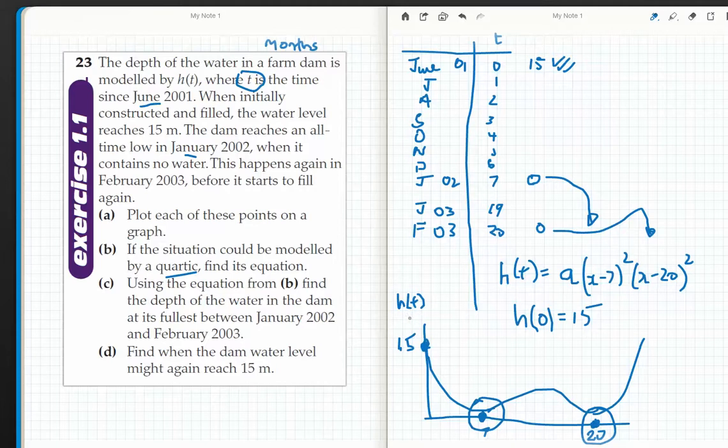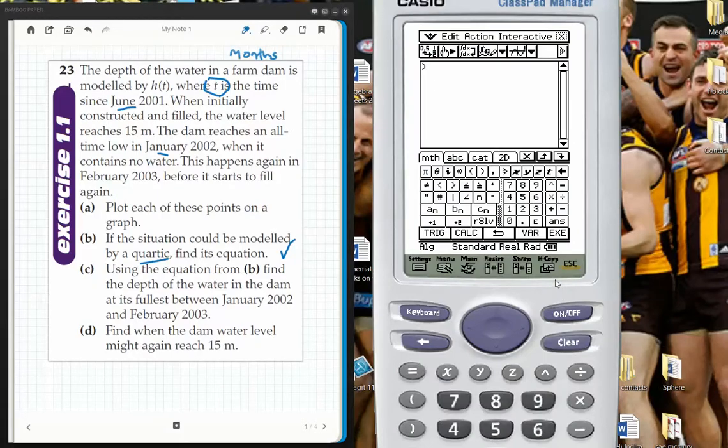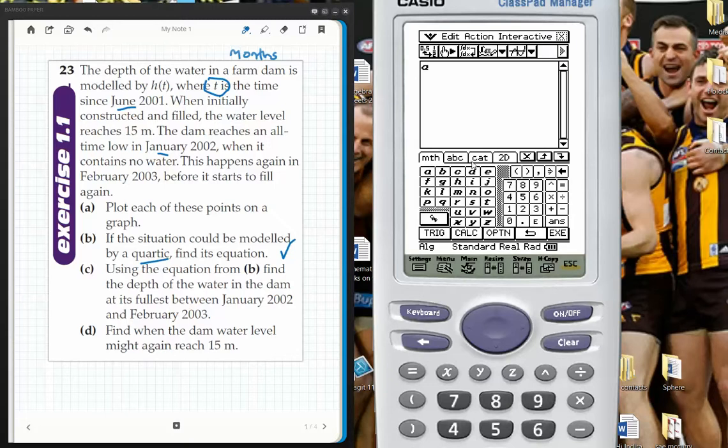So what I'd like to do is grab my calculator because I need to solve for A. So on my calculator, I have A times (X minus 7) squared times (X minus 20) squared.